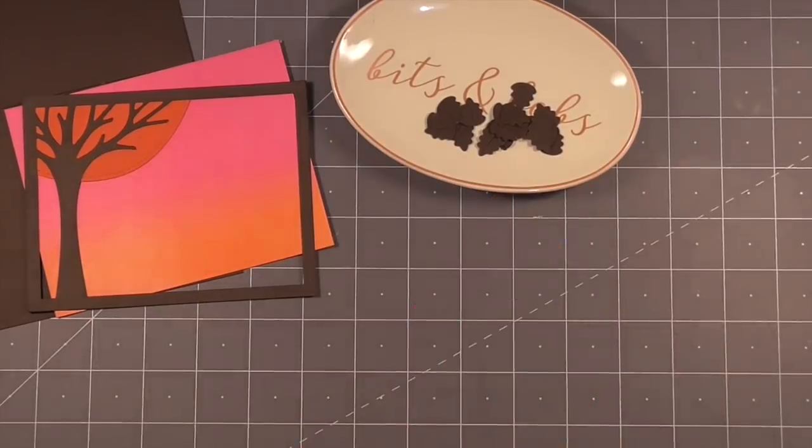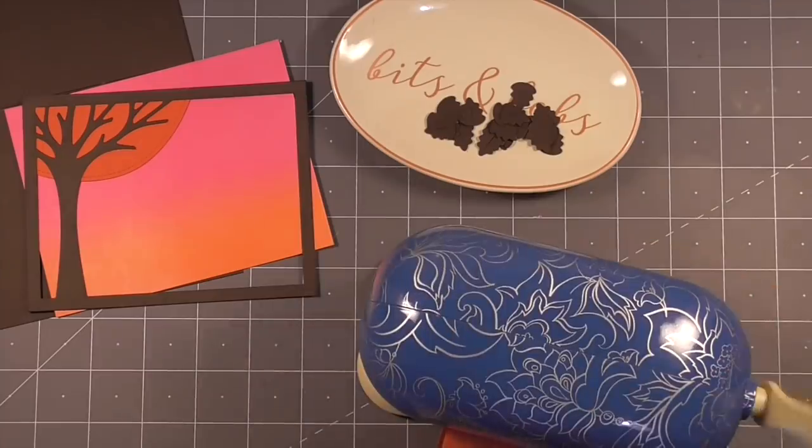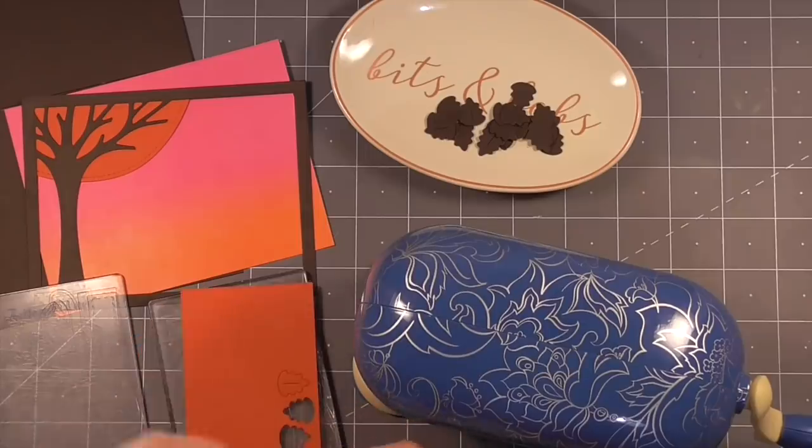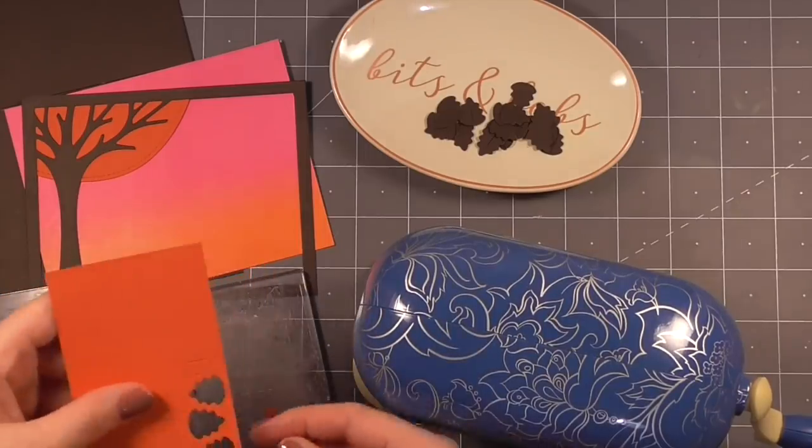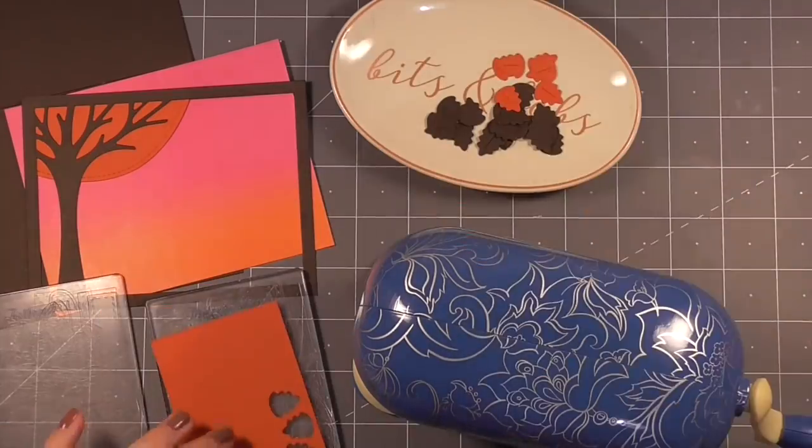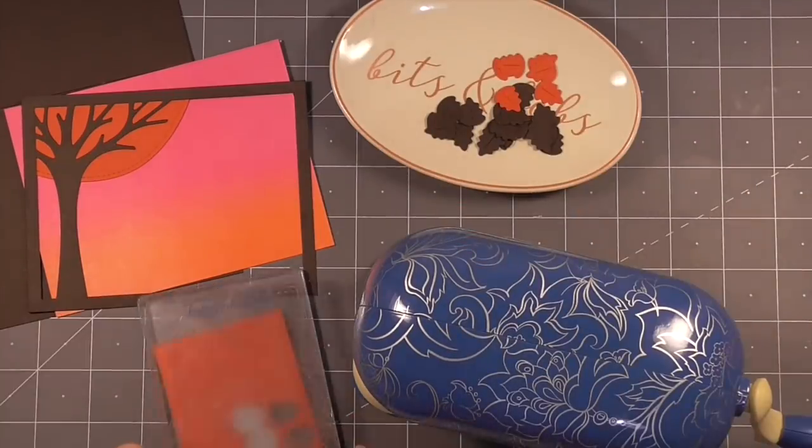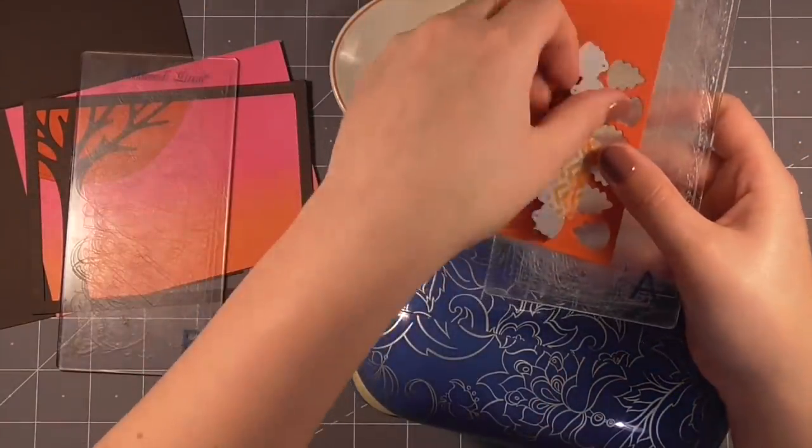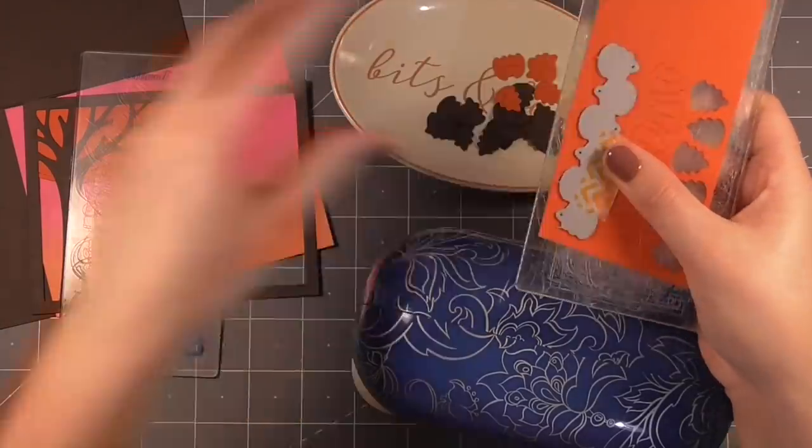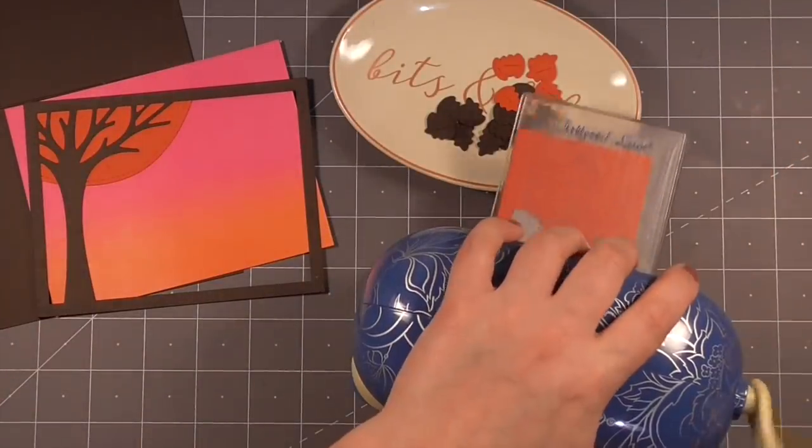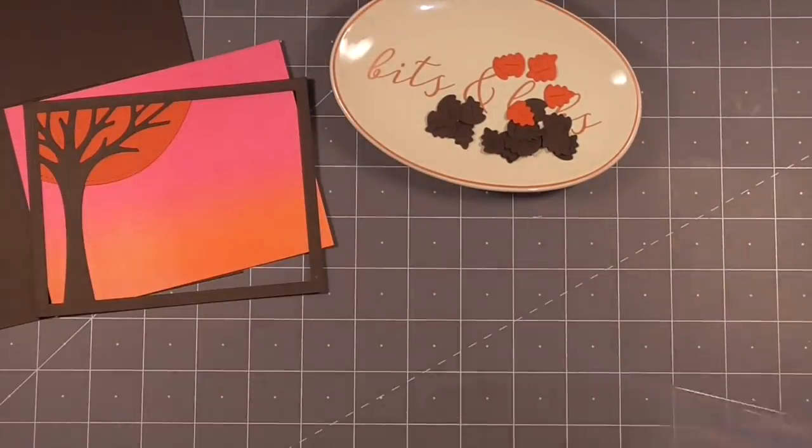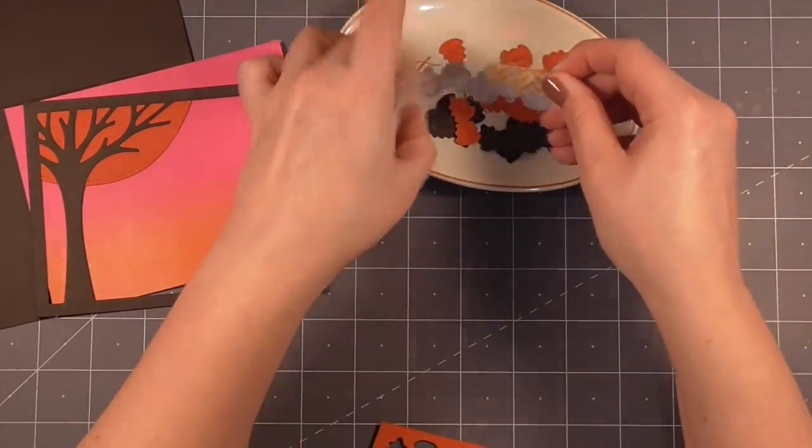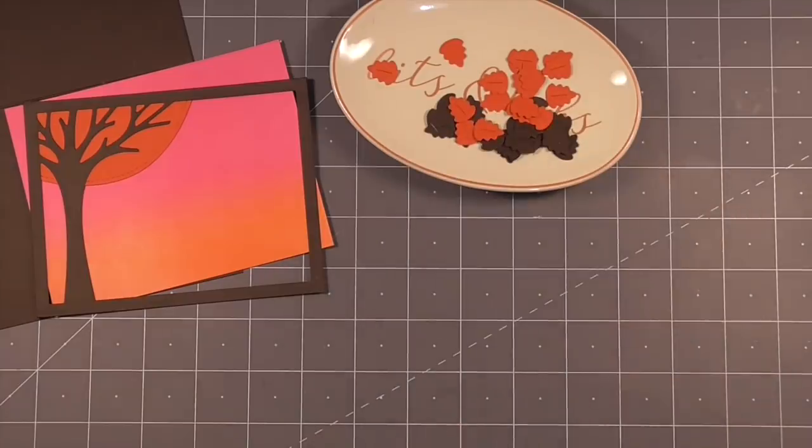Hack three is using your die cuts as your shaker element and creating a full panel shaker card. I've got this leafy tree background die from Lawn Fawn and I'm running that through my mini die cut machine a couple times to get all my different leaves. I've already gone ahead and assembled my frame with the tree and then the orange in the background for the autumnal feeling tree.